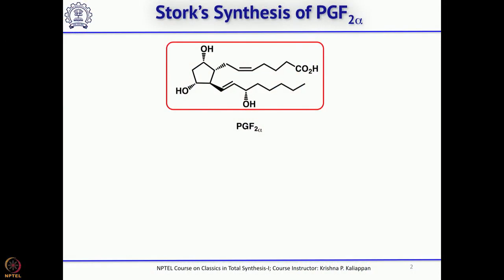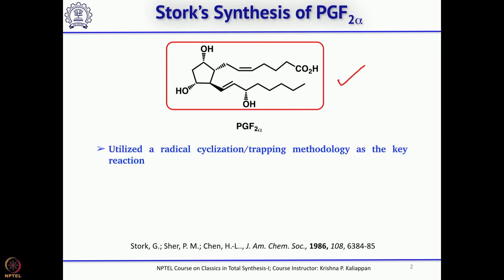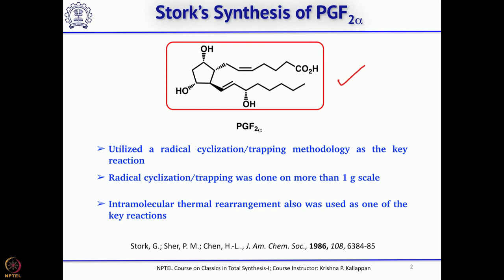First, let us start with the Stork synthesis of PGF2 alpha. As you know, this is the structure of PGF2 alpha. The key reactions which Professor Stork used in the synthesis are radical cyclization to form the five-membered ring, followed by trapping that 5-exo radical. A second key reaction is the intermolecular/intramolecular thermal rearrangement, also called Brooks rearrangement.